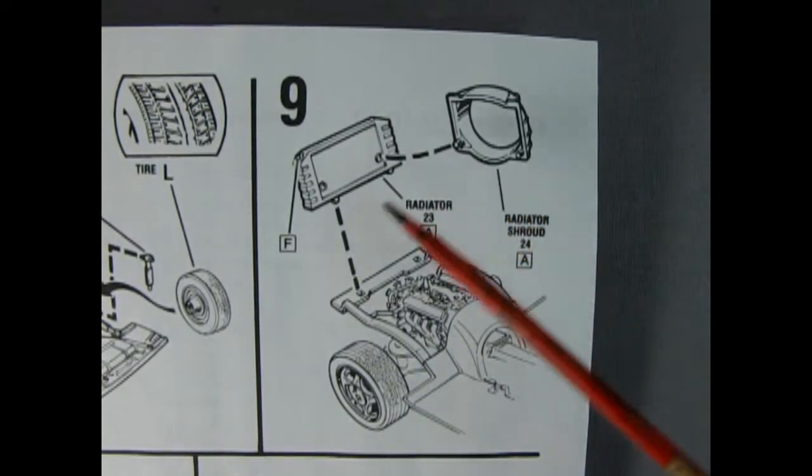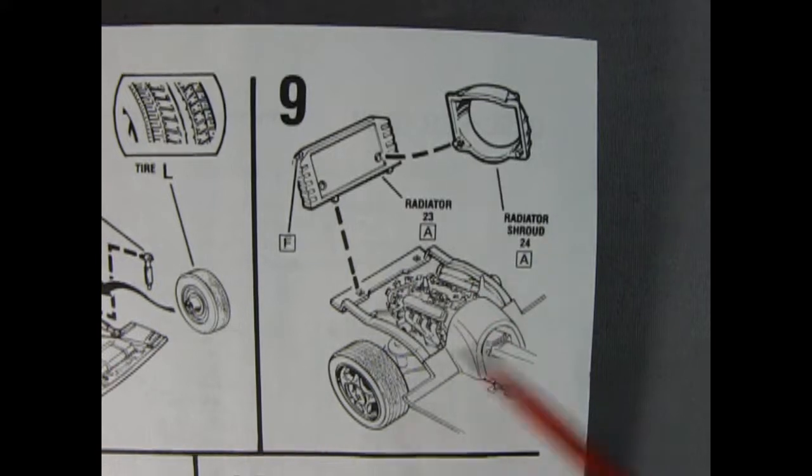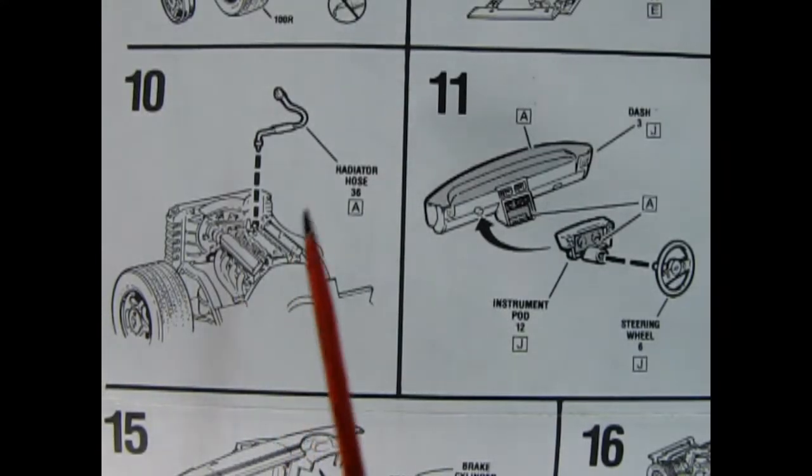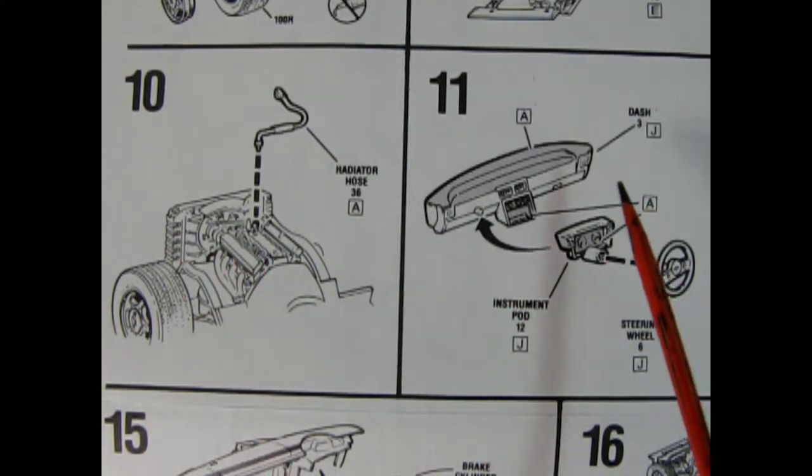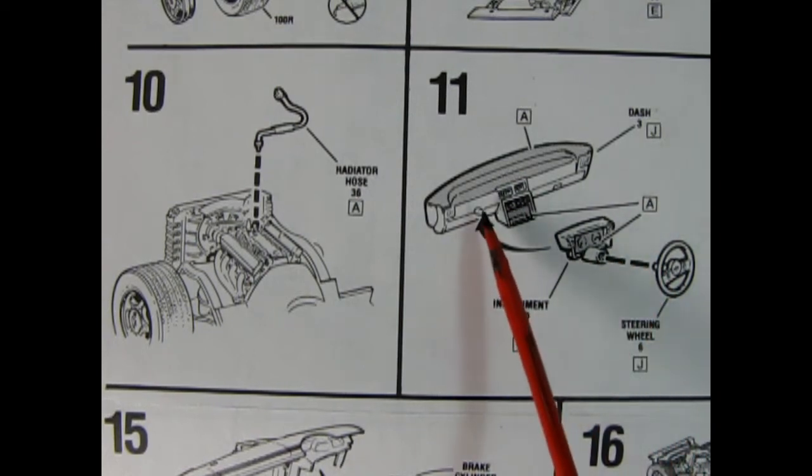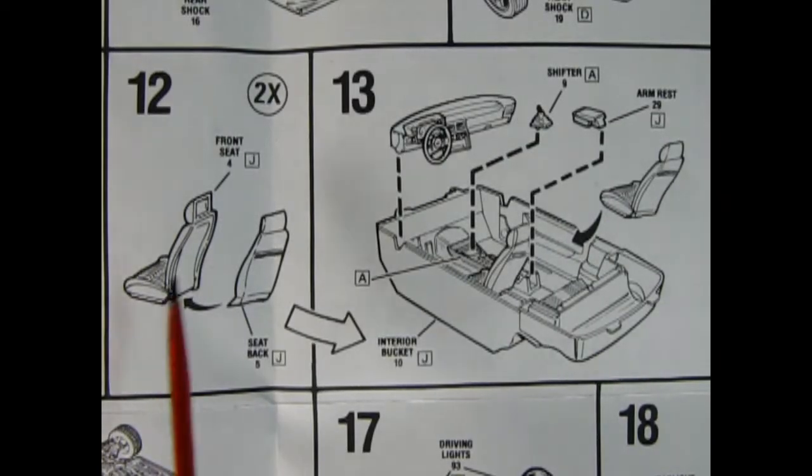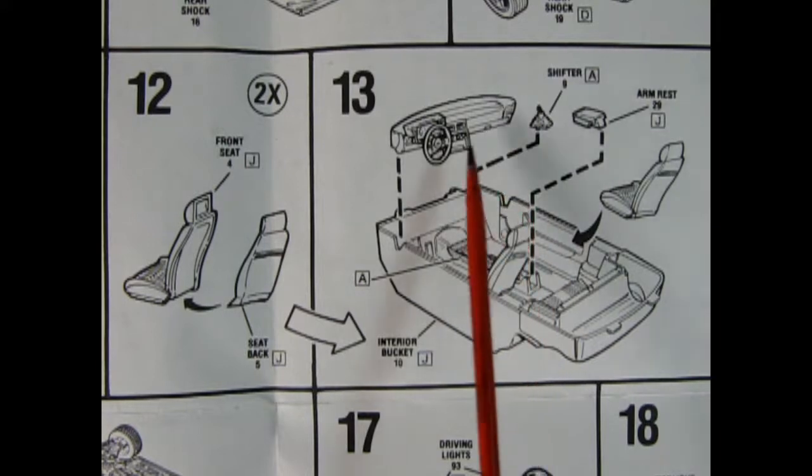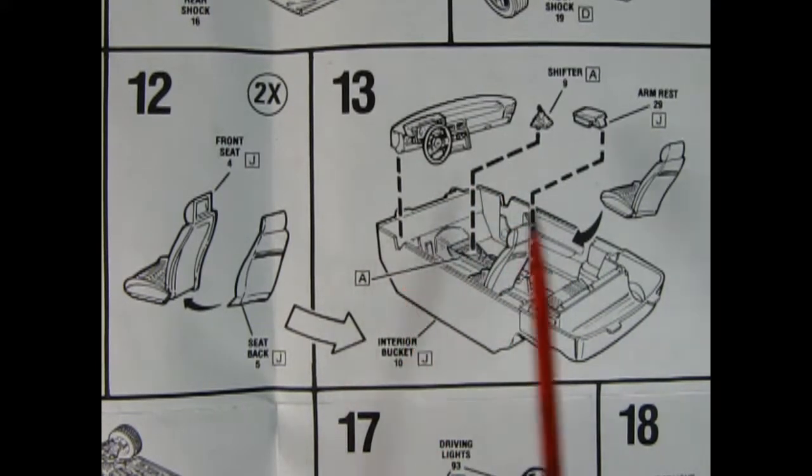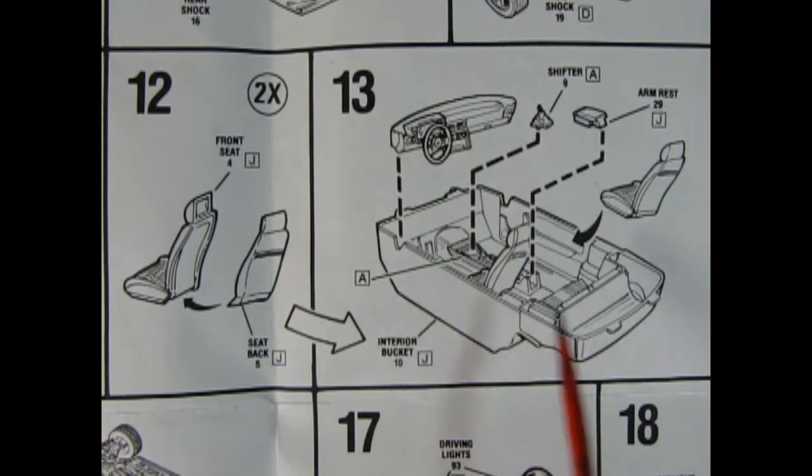Panel nine shows our radiator assembly going together. You've got the radiator itself and the radiator shroud. Glue them together, drop them on the front of your chassis. Panel 10 shows the upper radiator hose being dropped on top of the engine and going into our radiator shroud. In panel 11, we've got our dashboard, instrument cluster being glued on, and our steering wheel pops onto that steering column. Panel 12 shows our bucket seats going together. You've got the front and the back glued together. Make two of those and then move it across into your interior bucket. You've got your dashboard being dropped into place in these grooves, the shift lever goes into the center console, there's an armrest which also pops in, and then you put your seats in there.